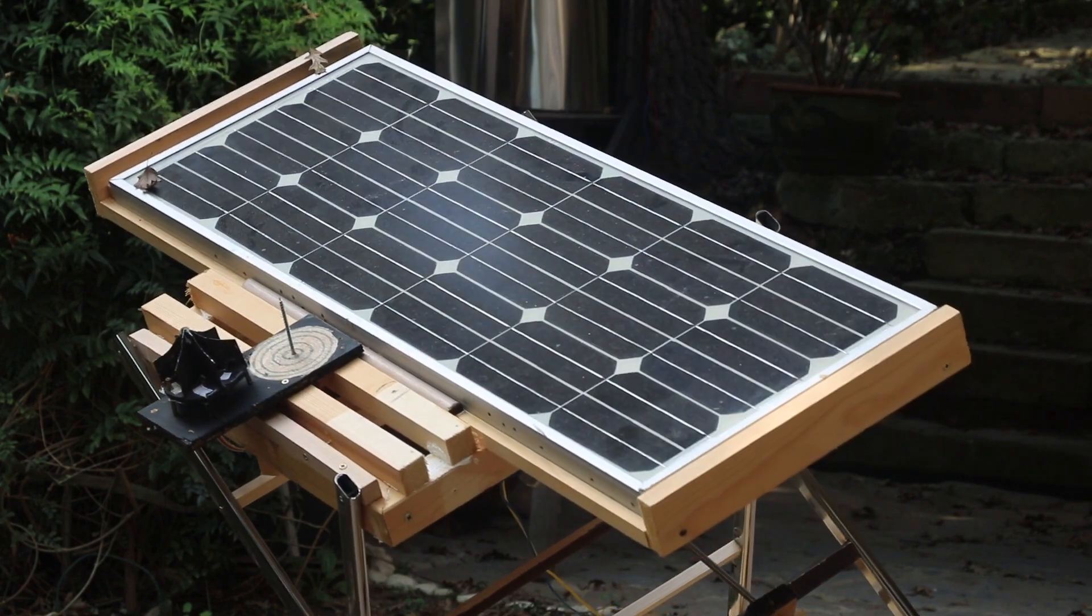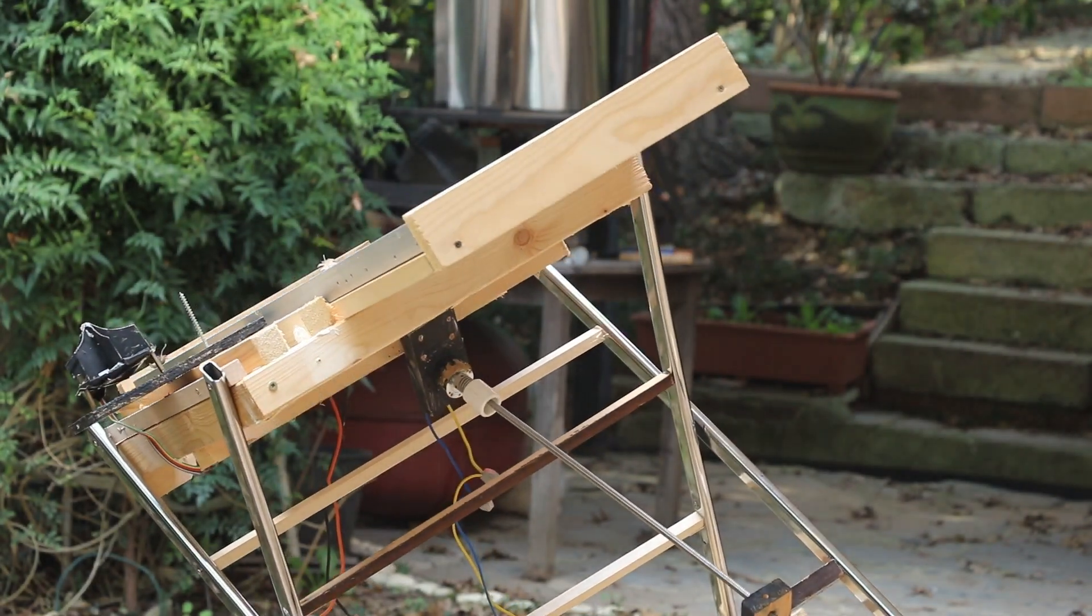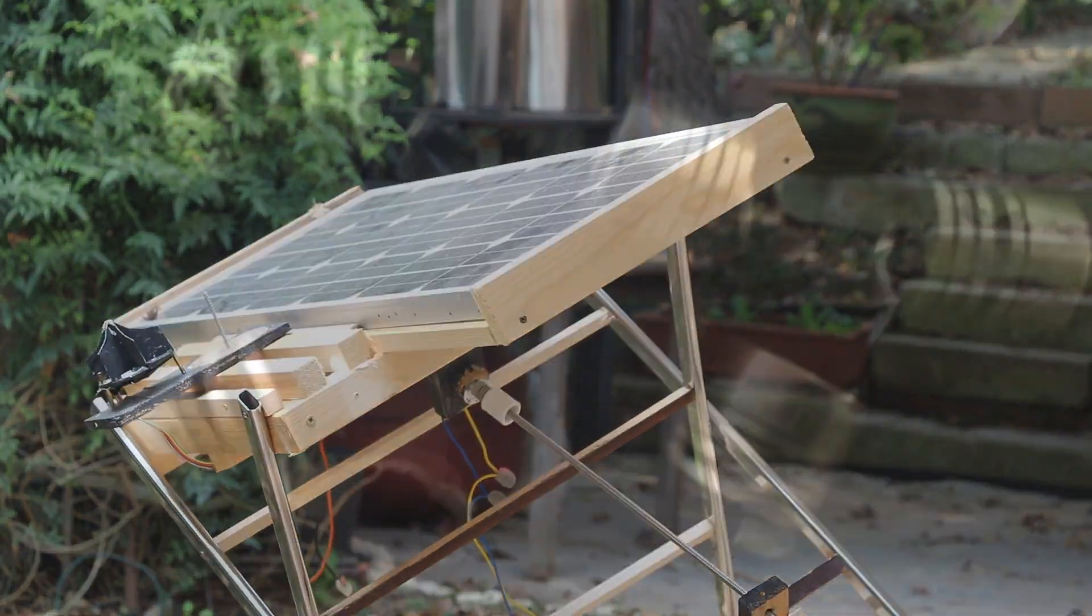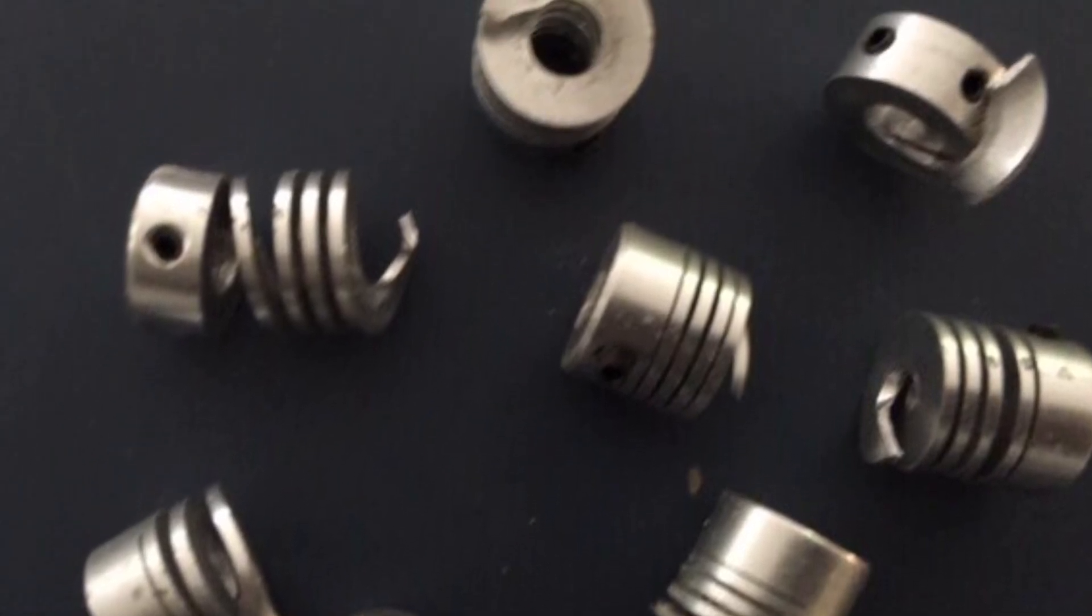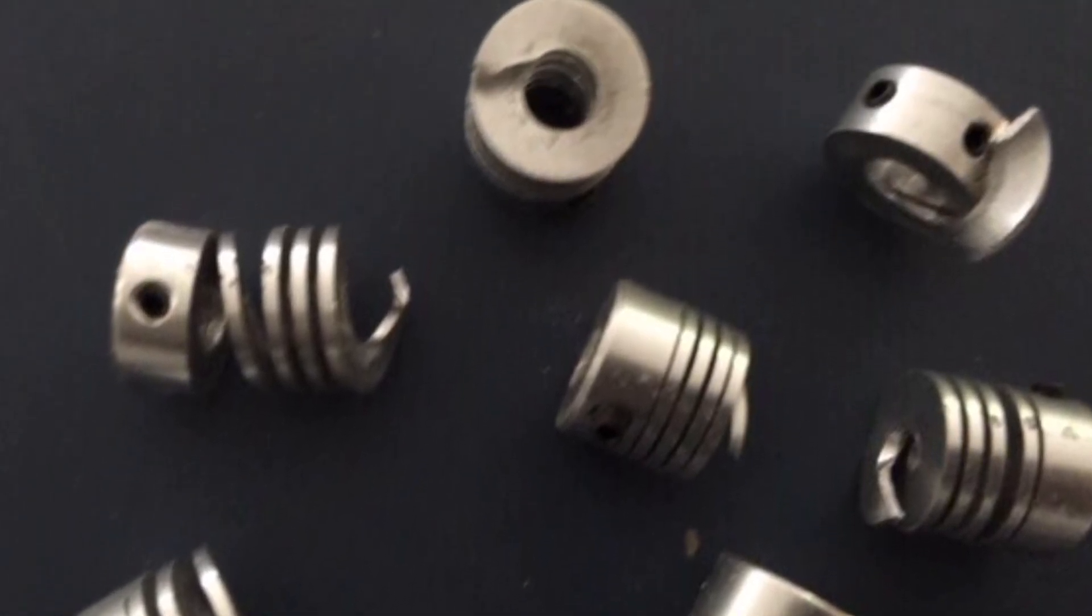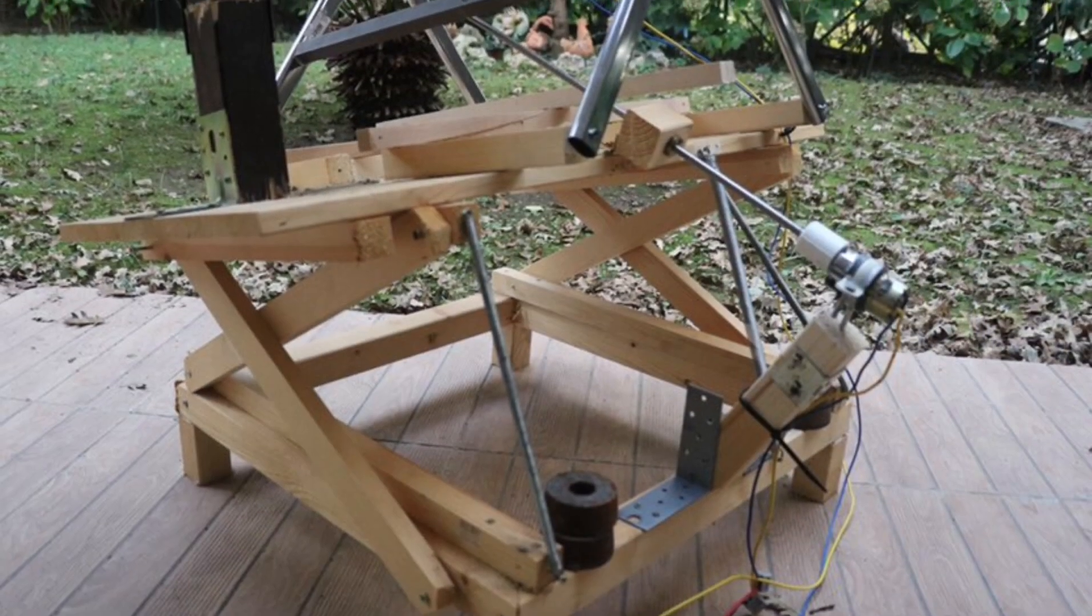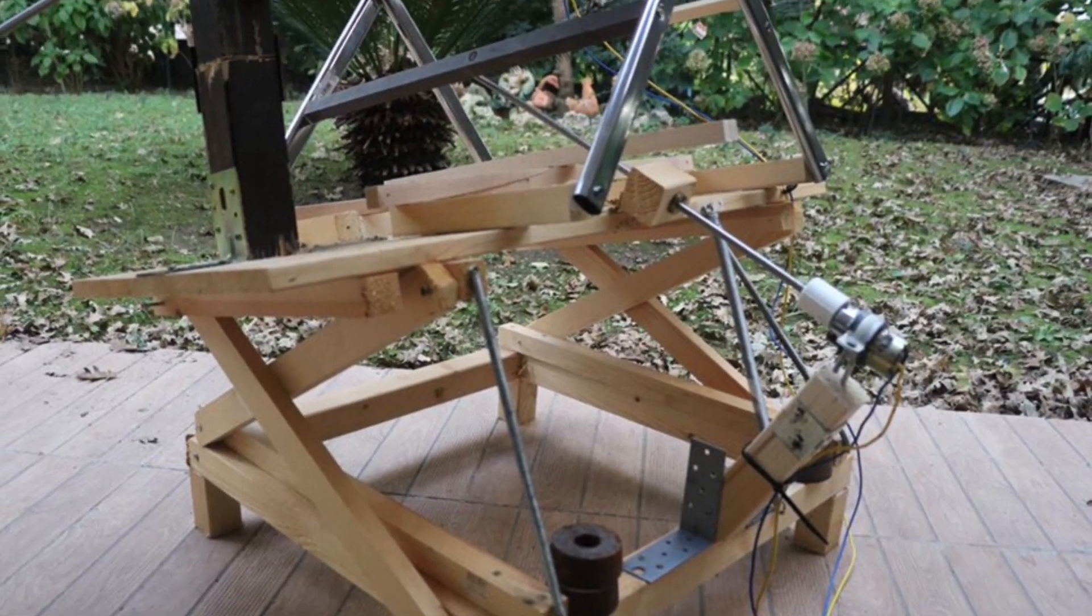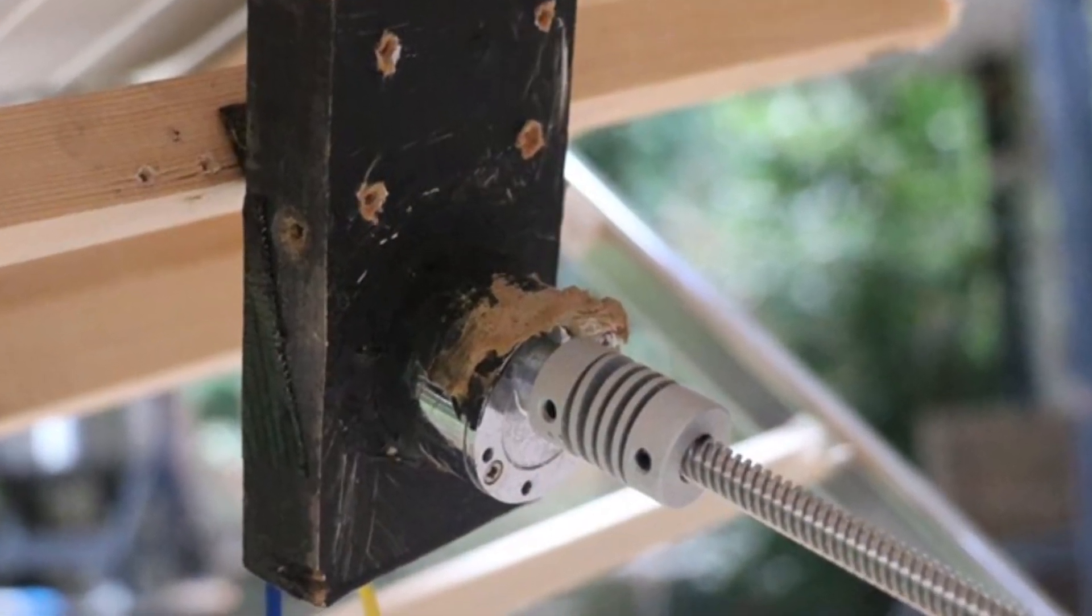Electronics and software code was never a problem, but mechanically I faced many problems. The biggest of the challenges was this: I kept breaking motor threaded mill couplings. The reason was the straight line motion of the threaded mill attached to the motor was not matching the circular arc motion of the panel plane. So somehow I had to convert the straight line motion to a circular arc motion.